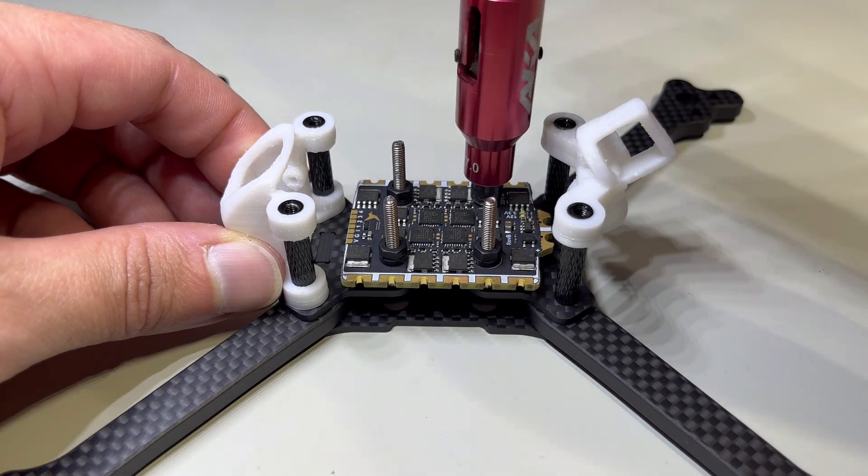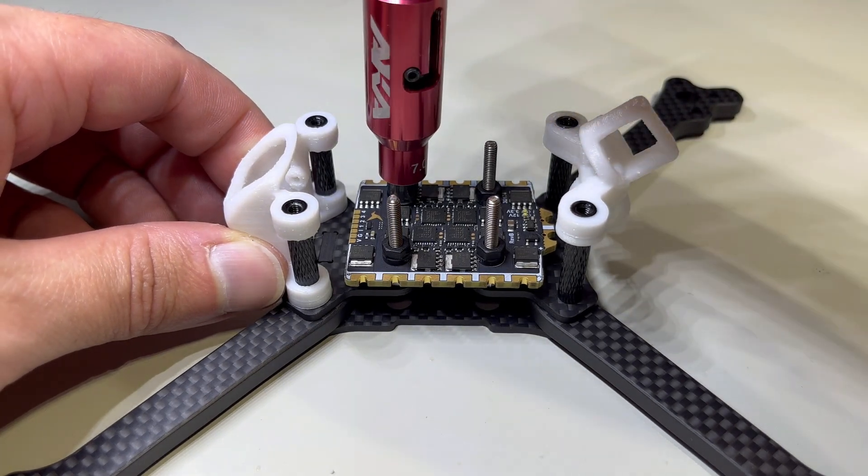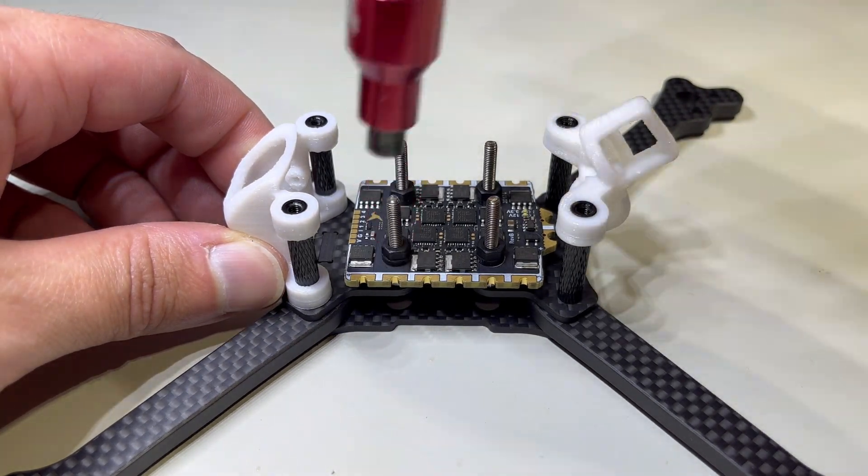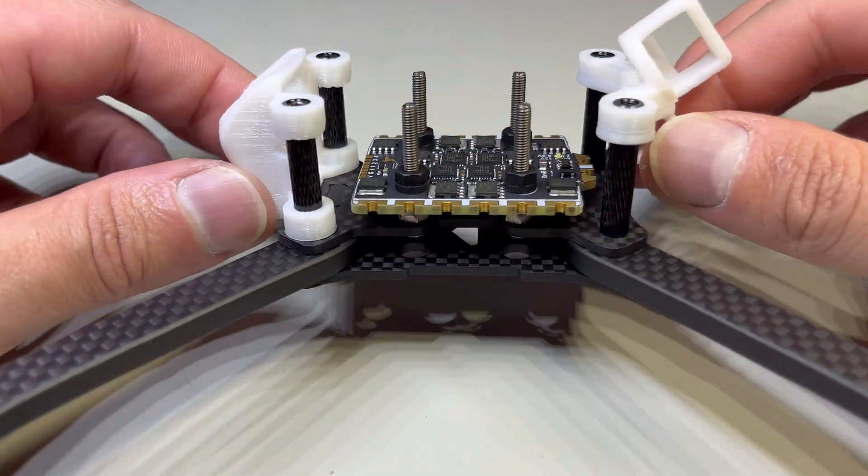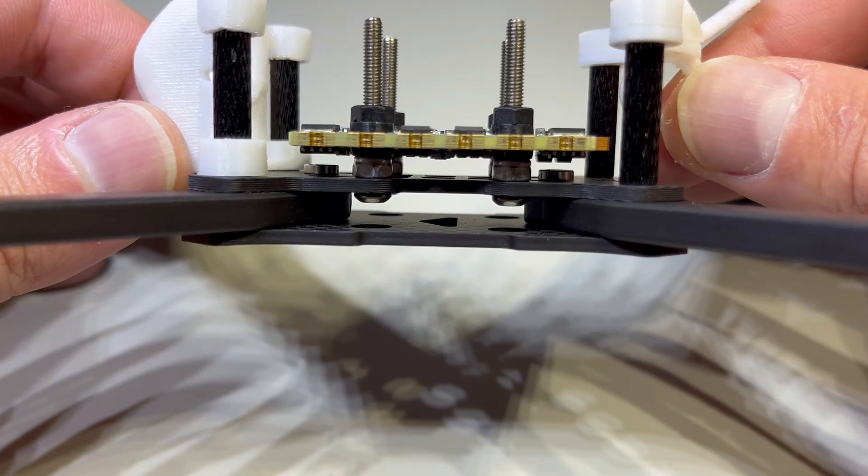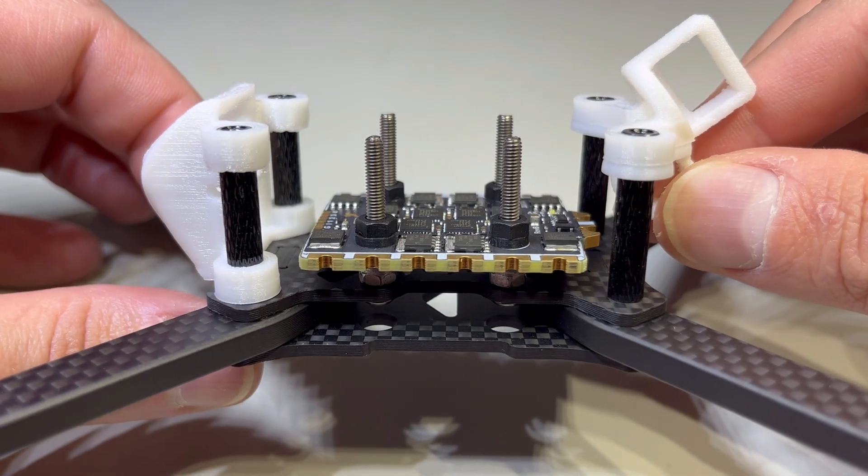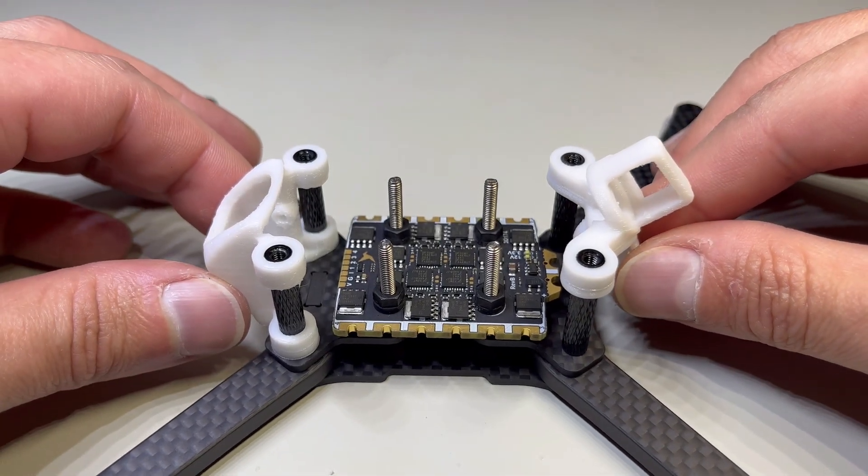So we don't want to over tighten these, we don't want to smash the gummies down. We still want a little bit of vibration resistance with those. And again, we have just the perfect amount of space between the bottom of the ESC and the frame.